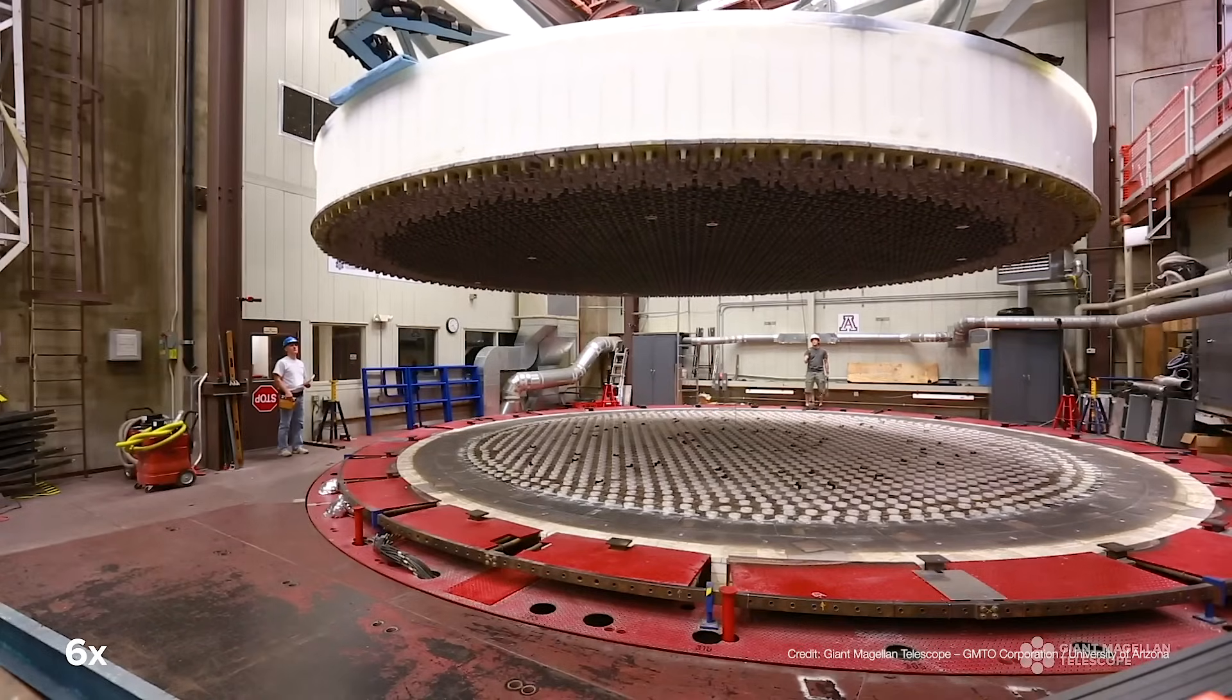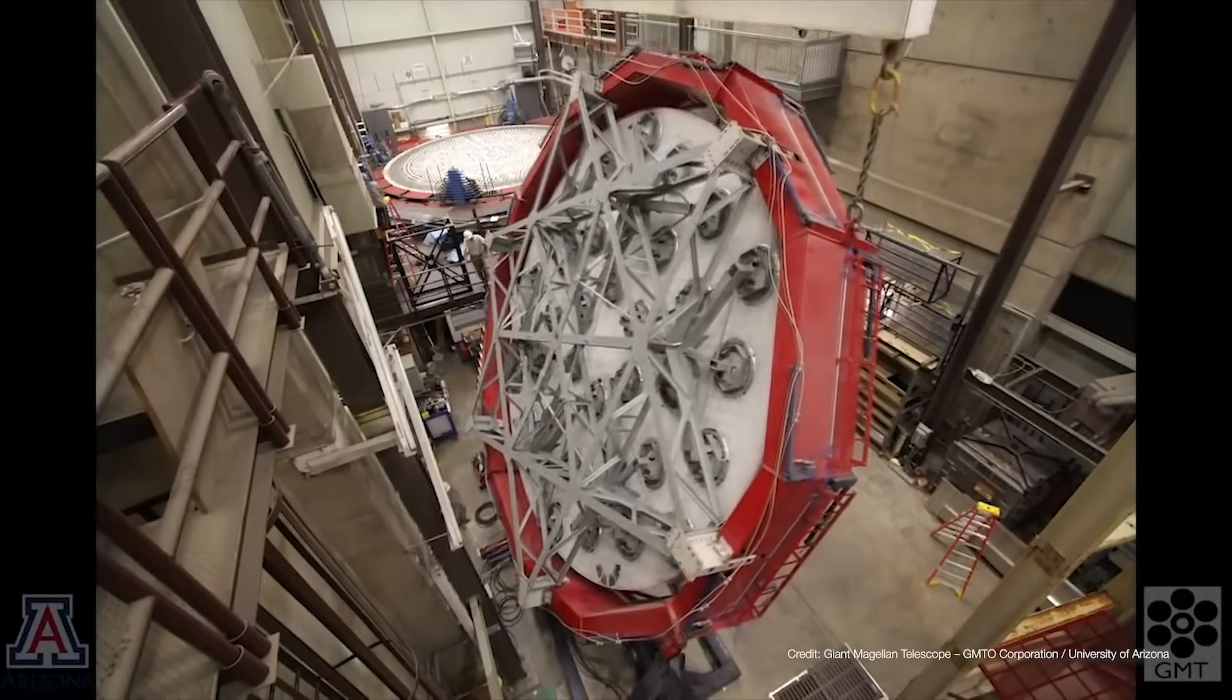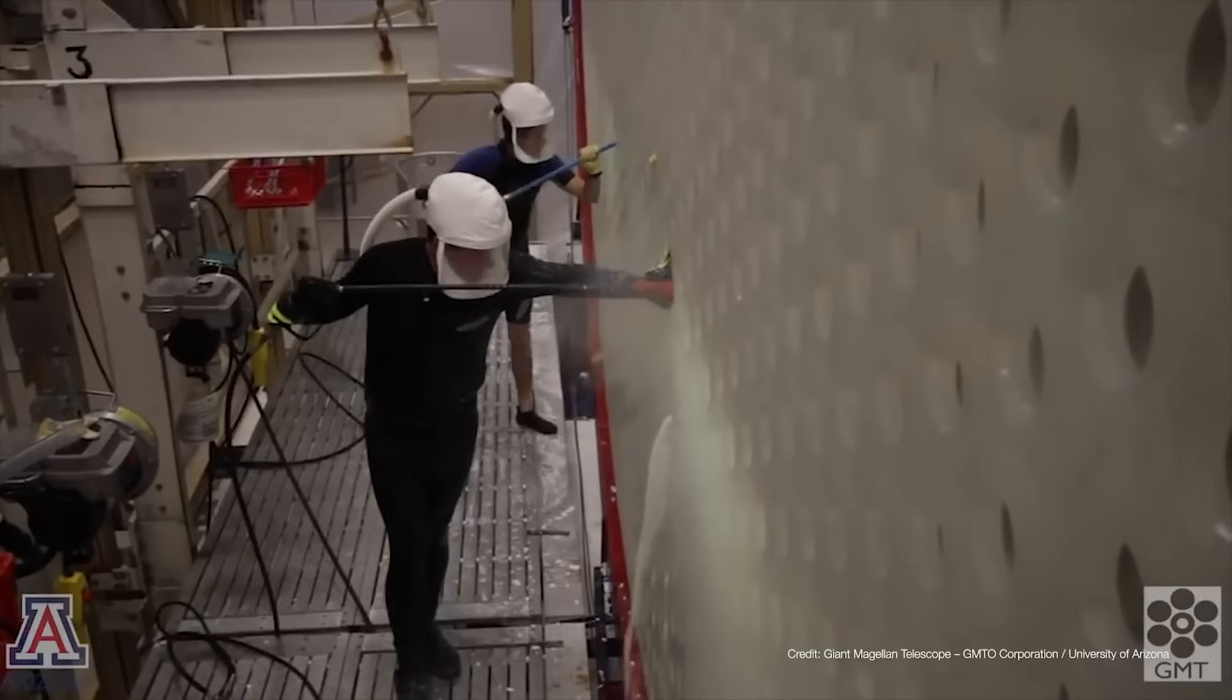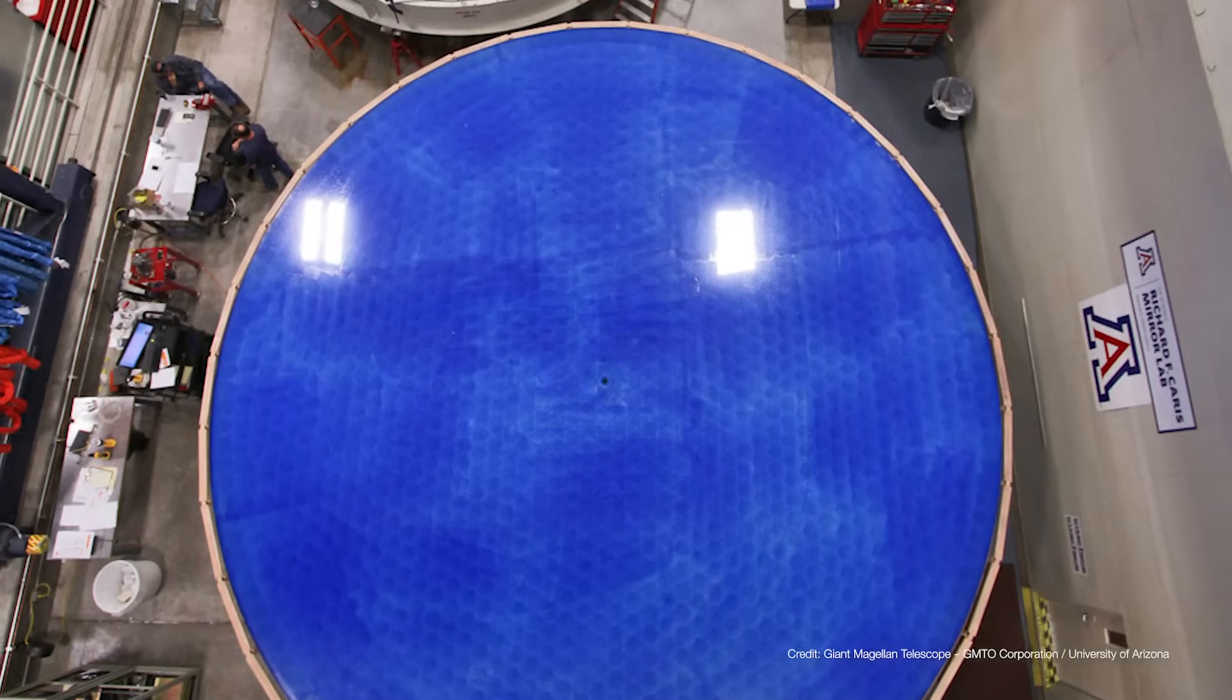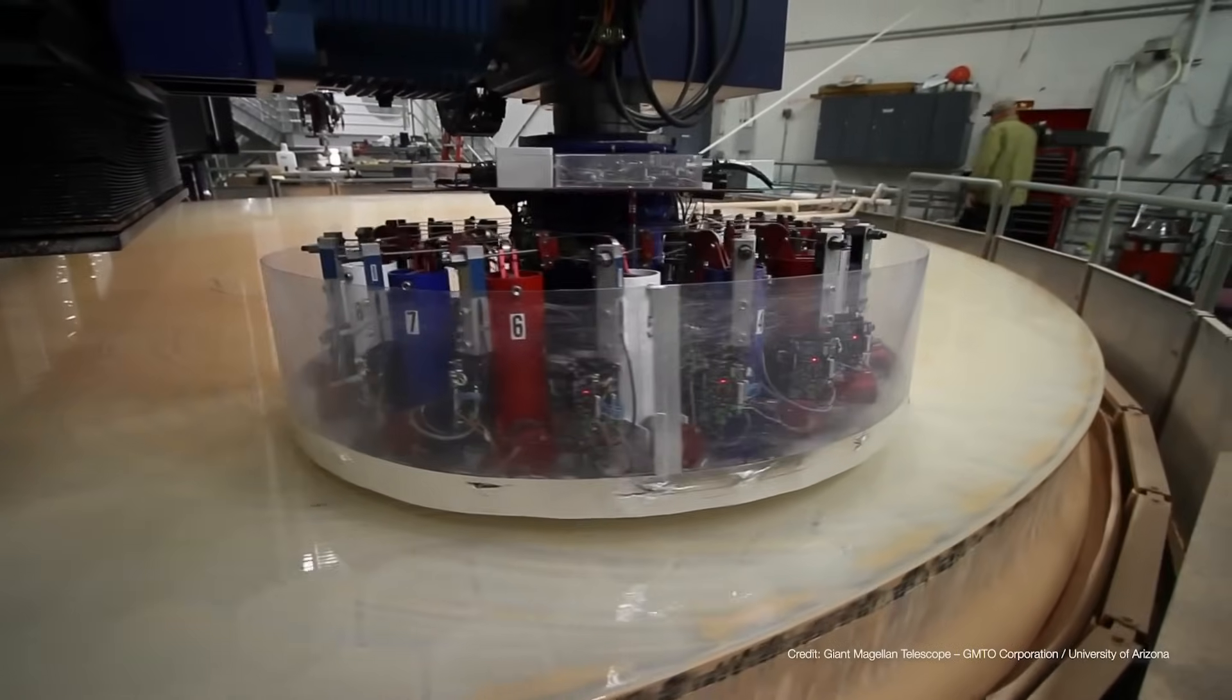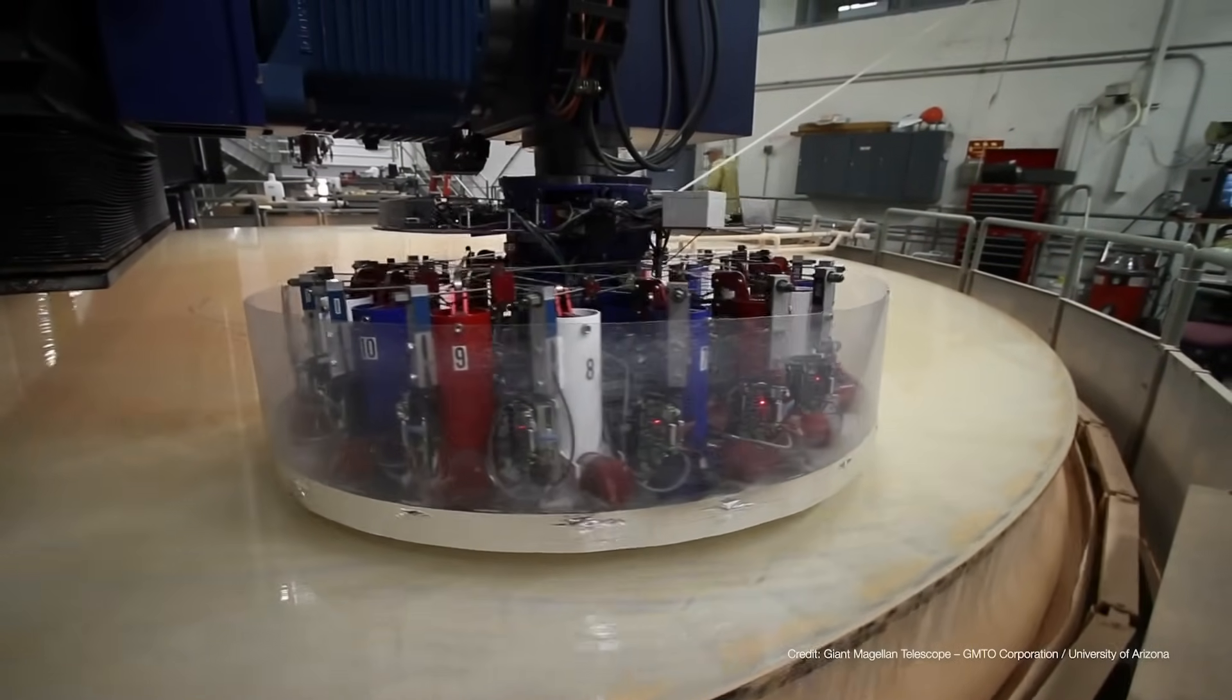Afterward, the glass and mold are removed, the mirror is turned upright, and the mold material is cleaned out. The result is a mirror that is 80% hollow and weighs a mere 20 tons. The mirror is then ground and polished to within 1/20th of the wavelength of light.